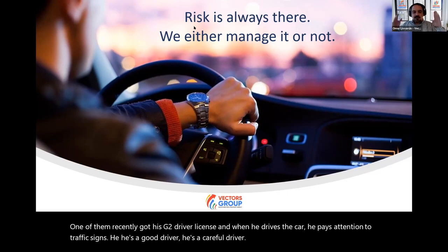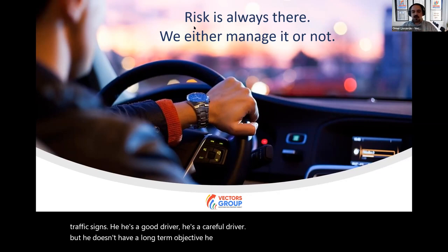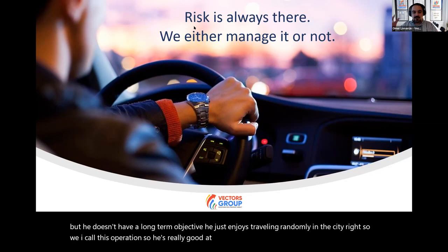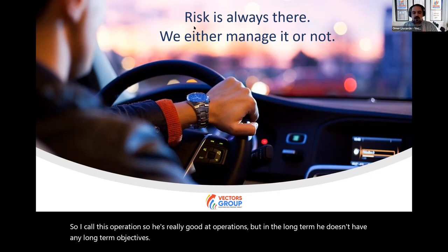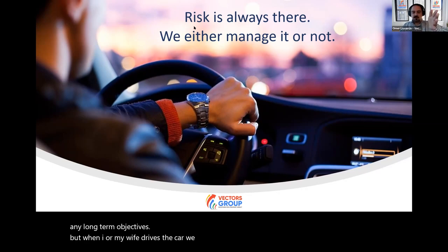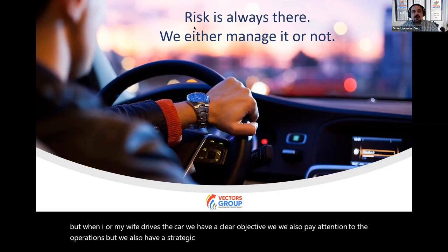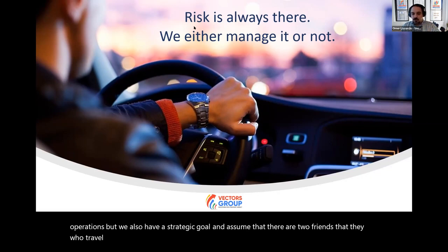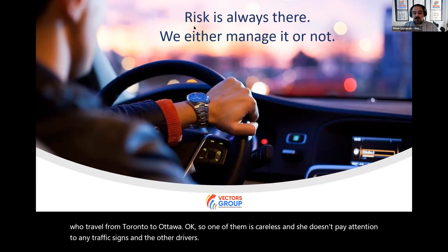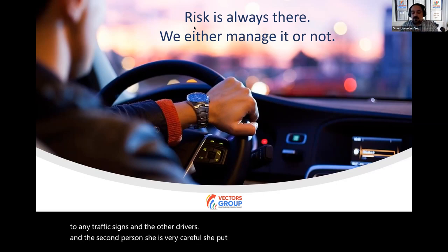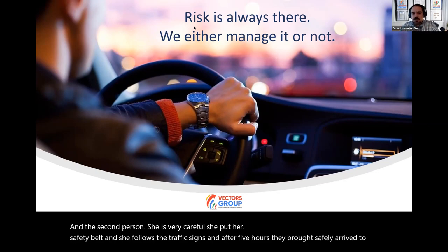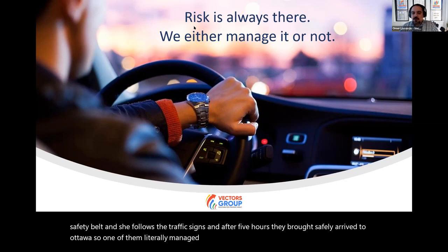Risk is always there — we either manage it or not. I have two sons; one recently got his G2 driver's license. When he drives, he pays attention to traffic signs but has no long-term objective — he just enjoys traveling randomly. That's operations. When my wife or I drive, we also pay attention to operations, but we have a strategic goal. Imagine two friends traveling from Toronto to Ottawa: one careless, ignoring traffic signs, the other very careful with her seatbelt. After five hours, both arrive safely. One managed the risk, the other ignored it — and the outcomes were the same.